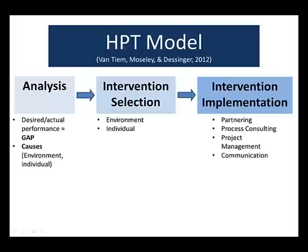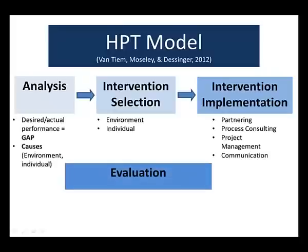The final step or phase in this model is evaluation, and this really takes three major forms. The first is formative, which means that you evaluate what's happening to get feedback and improve the process. Summative really helps you to see whether it's working, whether people are actually learning or the performance is improving. And then confirmative checks to see the effectiveness, efficiency, or the impact of what's been done.